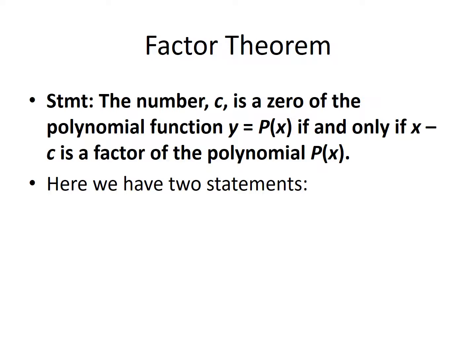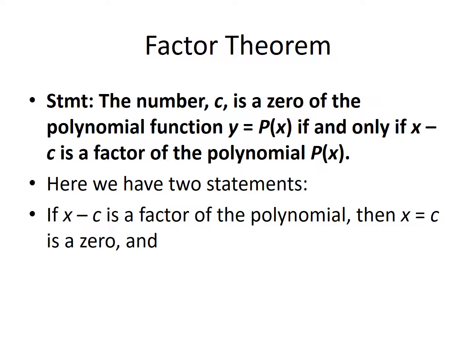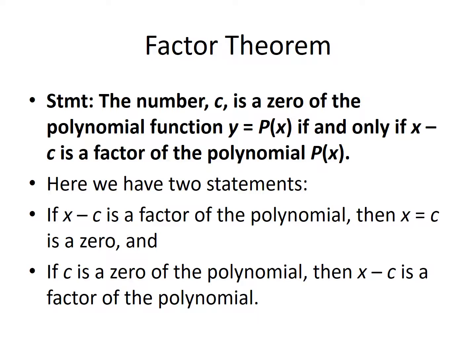Here we have two statements embedded into one. The first is: if x minus c is a factor of the polynomial, then x equals c is a zero. So if you can write a polynomial with x minus a number, then x equal that number has to be a zero of that polynomial. And if we already know that a value c is a zero of the polynomial, then x minus c is a factor of the polynomial.